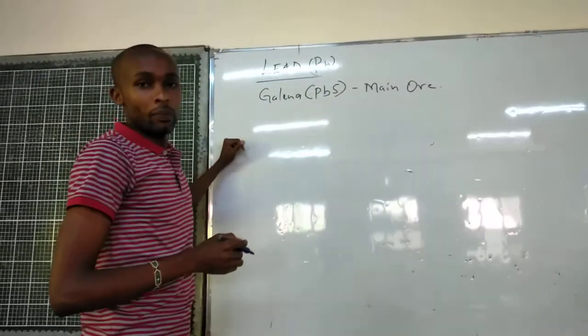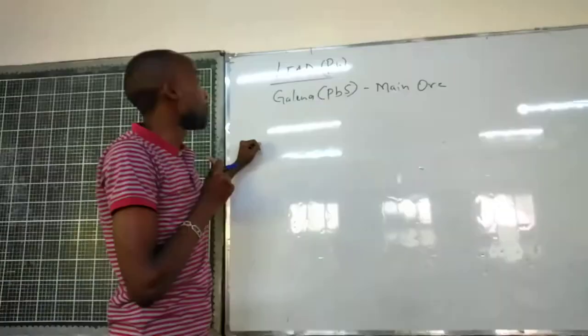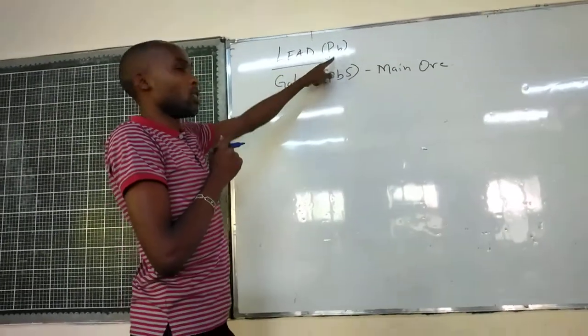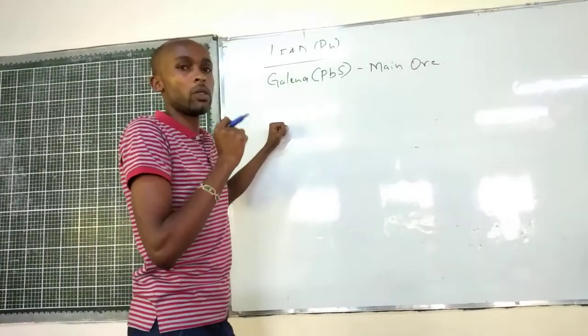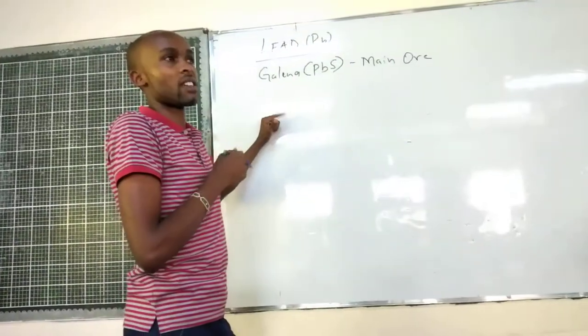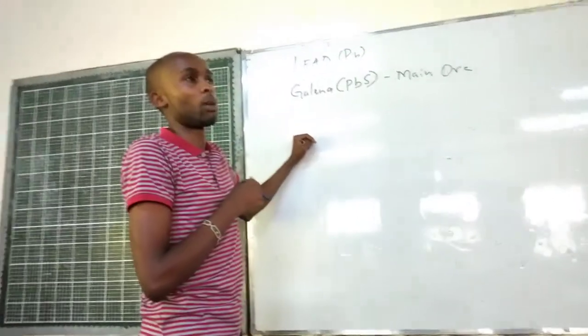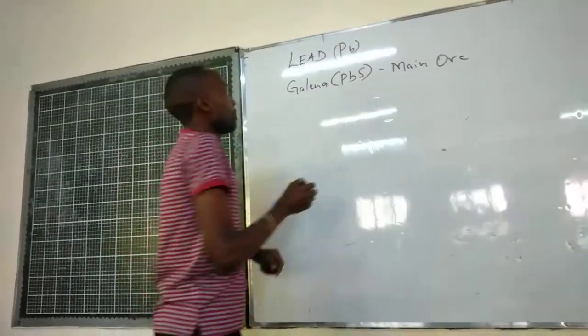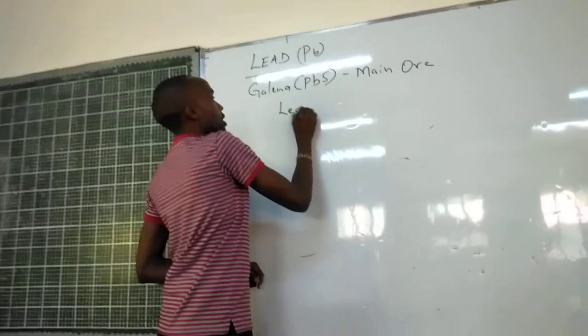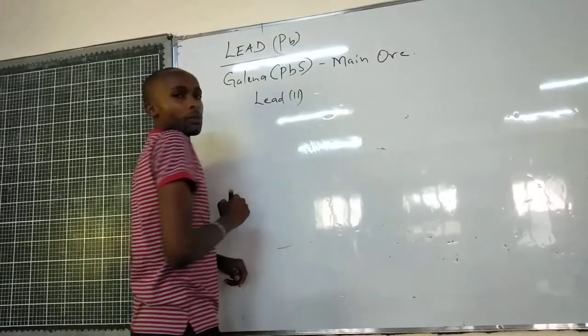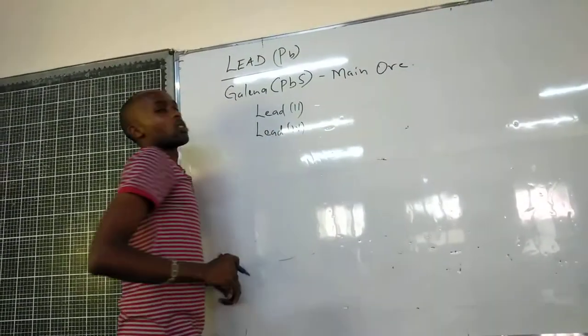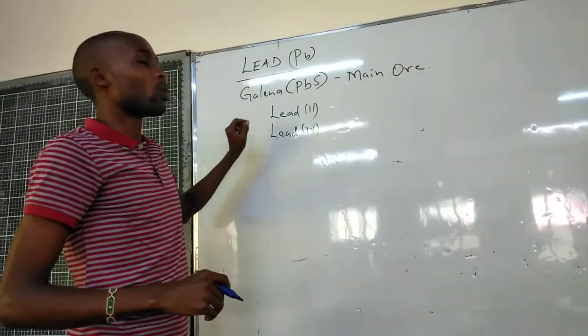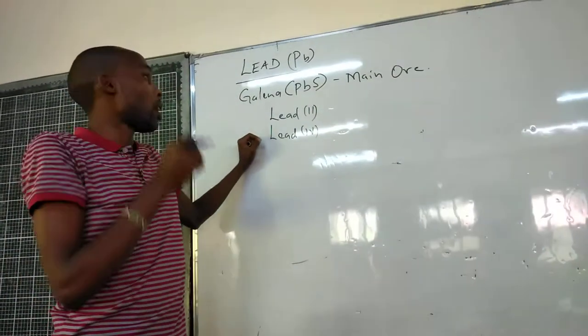Then, for Lead, one thing before we proceed, let me mention that it is also a transition element and it forms compounds with a variety of oxidation states or oxidation numbers, to be precise. And the two main oxidation numbers, we have Lead(II) and Lead(IV).